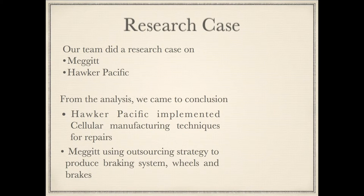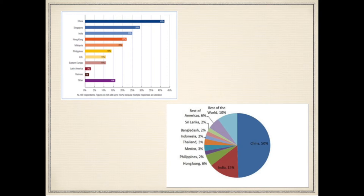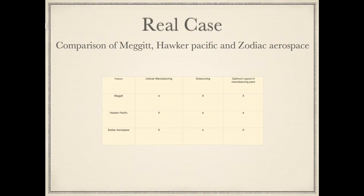Research Case: Our team did a research case on Mejgit and Walker Pacific. From the analysis we concluded that Walker Pacific implemented cellular manufacturing techniques for repairs, while Mejgit used an outsourcing strategy to produce braking system wheels and brakes. This slide explains the main reason why Mejgit outsources non-core components to China. The real case provides a comparison of Mejgit, Walker Pacific, and Zodiac Aerospace.